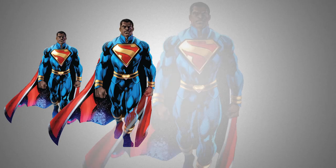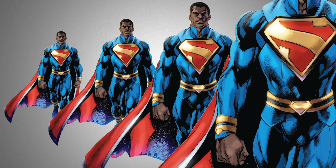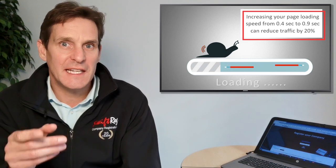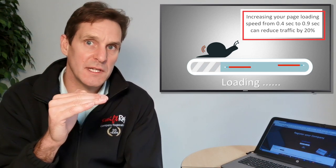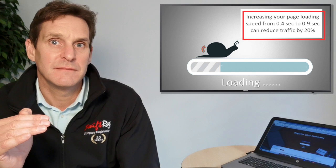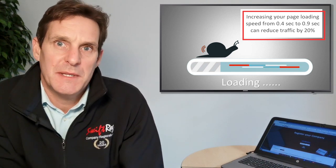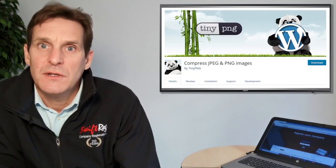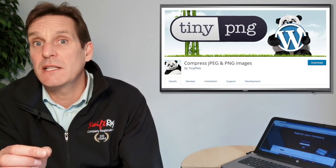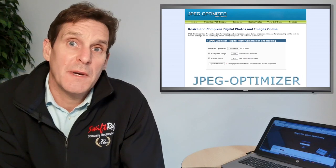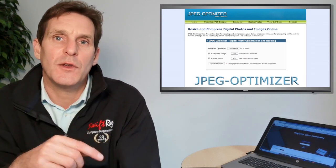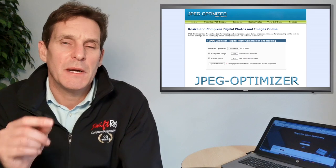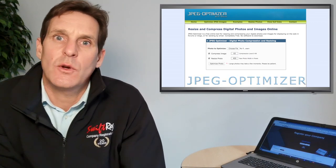The size of the image, especially the hero image, is important as it shouldn't be too big so as to slow down the site and frustrate your clients. Google has shown that increasing your page loading speed from 0.4 seconds to 0.9 can reduce traffic by 20%, so it's a good idea to optimize your high quality image by using tools such as TinyPNG or JPEG Optimizer, which reduces the size of the image allowing your site to load faster without pixelating or losing quality.